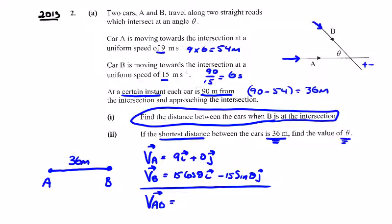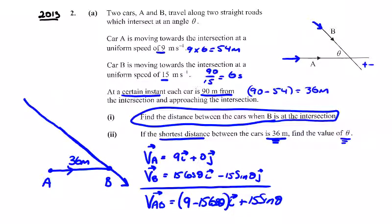And if this 36 meters is the shortest distance, B is coming down like this with velocity of B, and this is the velocity of A going in this direction. So the velocity of A relative to B, if this is the shortest distance, will have to be one of the straight sides. Therefore, it will have to form a right angle with the velocity of B.